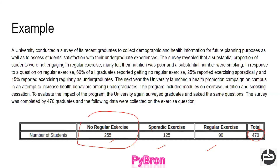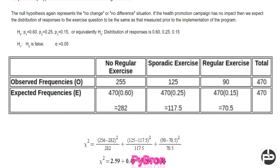So the P-values — the probability of accepting or rejecting the null hypothesis. 60% of total graduates are not doing regular exercise, which is 0.6; 25% are doing somewhat, which is 0.25; and 15% are doing regular exercise, which is 0.15. These are P1, P2, P3. The null hypothesis is that the distribution of responses is 0.6, 0.25, 0.15. As a statistician, the first row of data — 255, 125, 90 — this is our observed value.